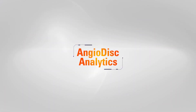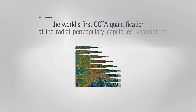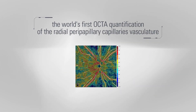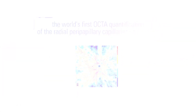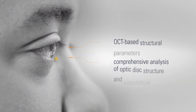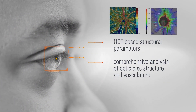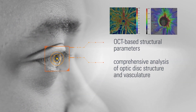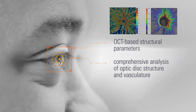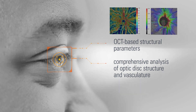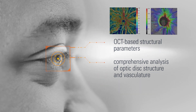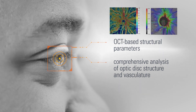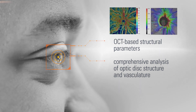AngioDiscAnalytics provides the world's first OCTA quantification of the radial parapapillary capillaries. Alongside OCT-based structural parameters, this supports comprehensive analysis of optic disc structure and vasculature.